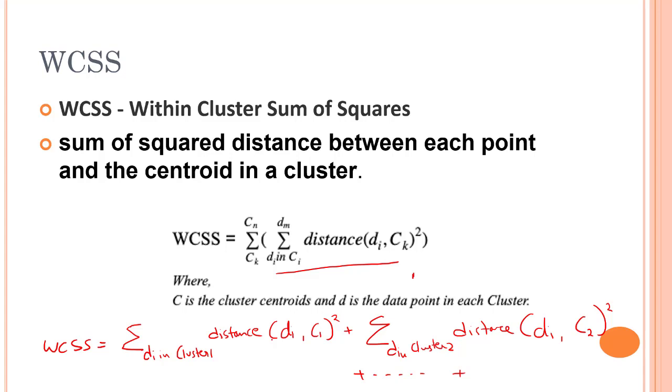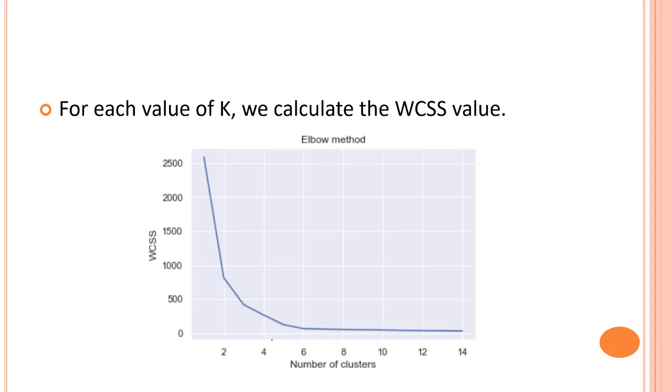So that's about WCSS. Let's look into the steps behind it. What we do is, for each and every value of k, we execute the k-means clustering for a specific range, maybe k value from k equals 1 to 30. For each value of k, k equal to 1, k equal to 3, until we have k equal to 30, for each value of k, we find out the WCSS value.